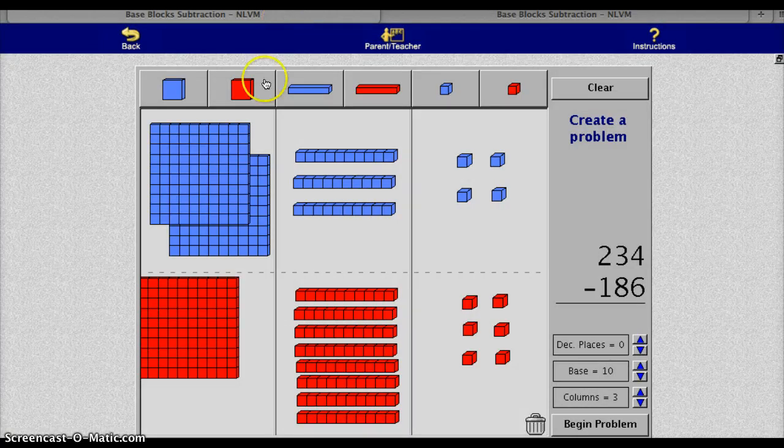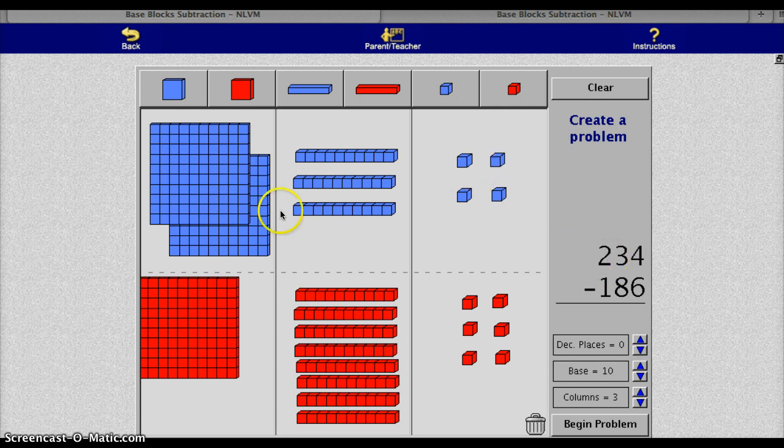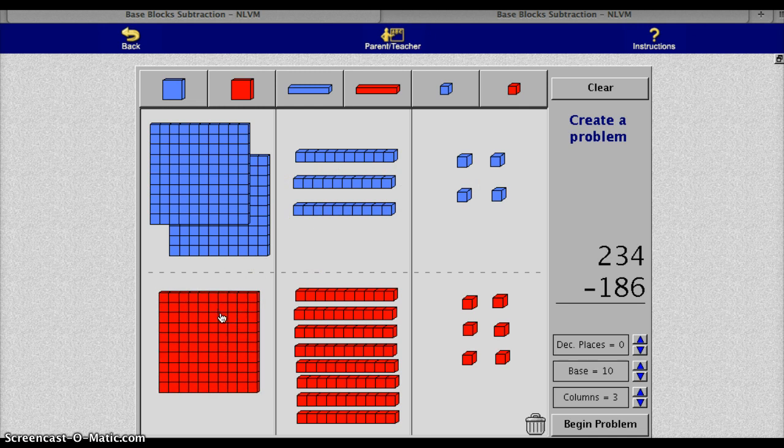I'm going to use this site right here. This is a site that we'll introduce from our classroom website in class tomorrow. This, in blue, remember the blue number was on top, is the number 234. Below it, getting subtracted, is the number 186.